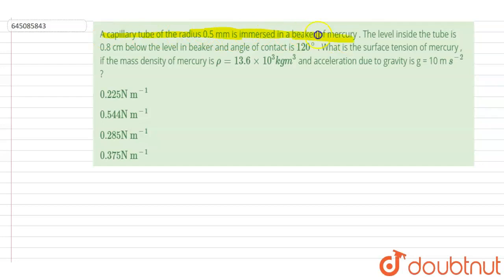The level inside the tube is given as 0.8 centimeter below the level in the mercury.